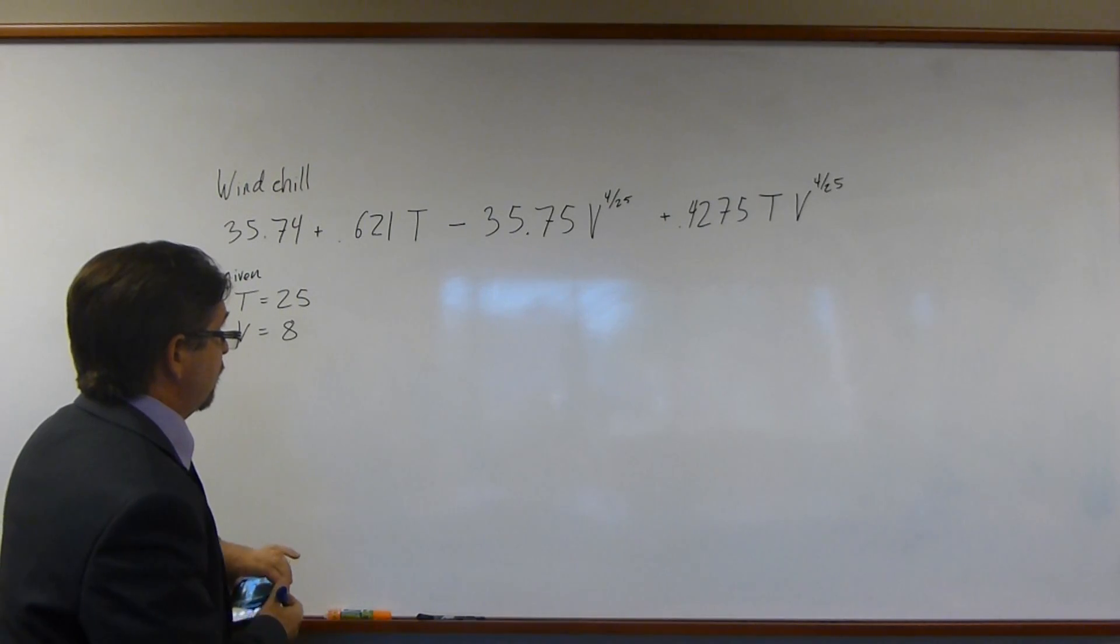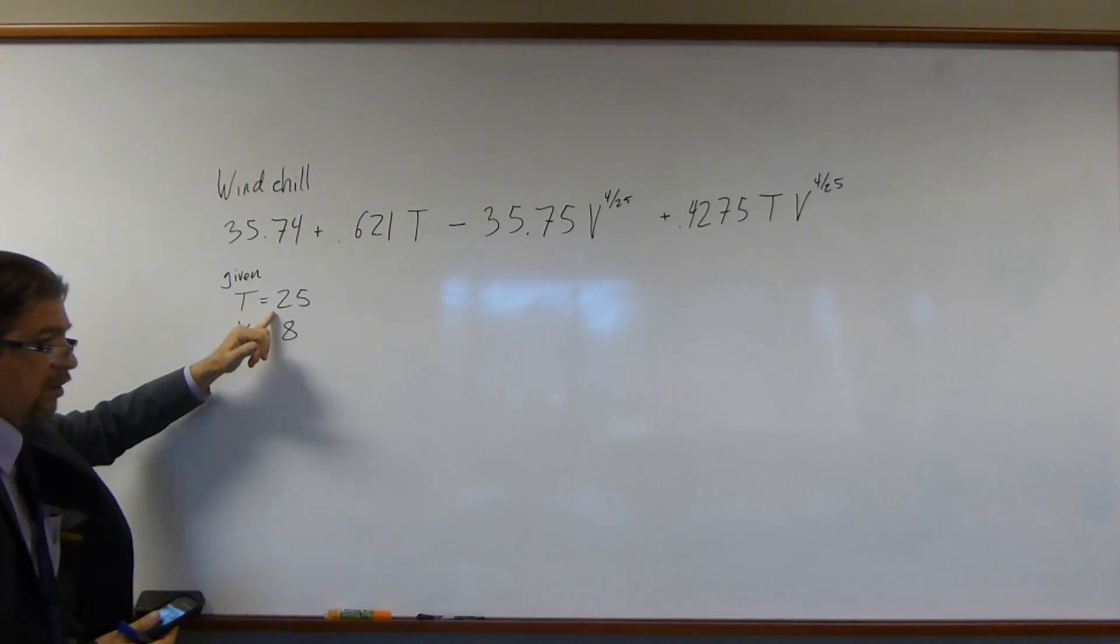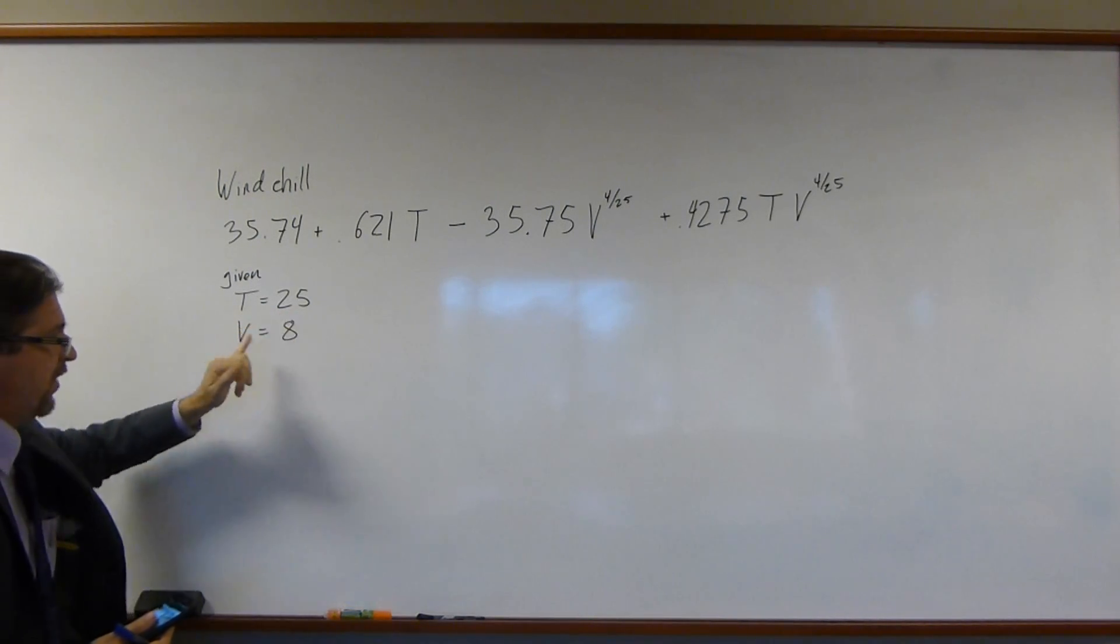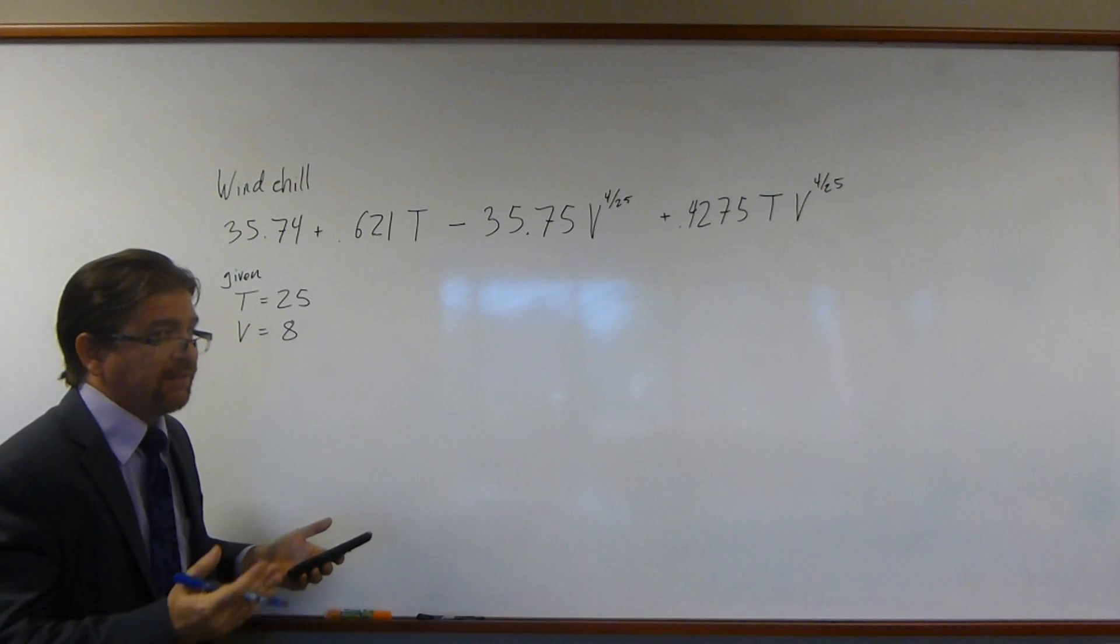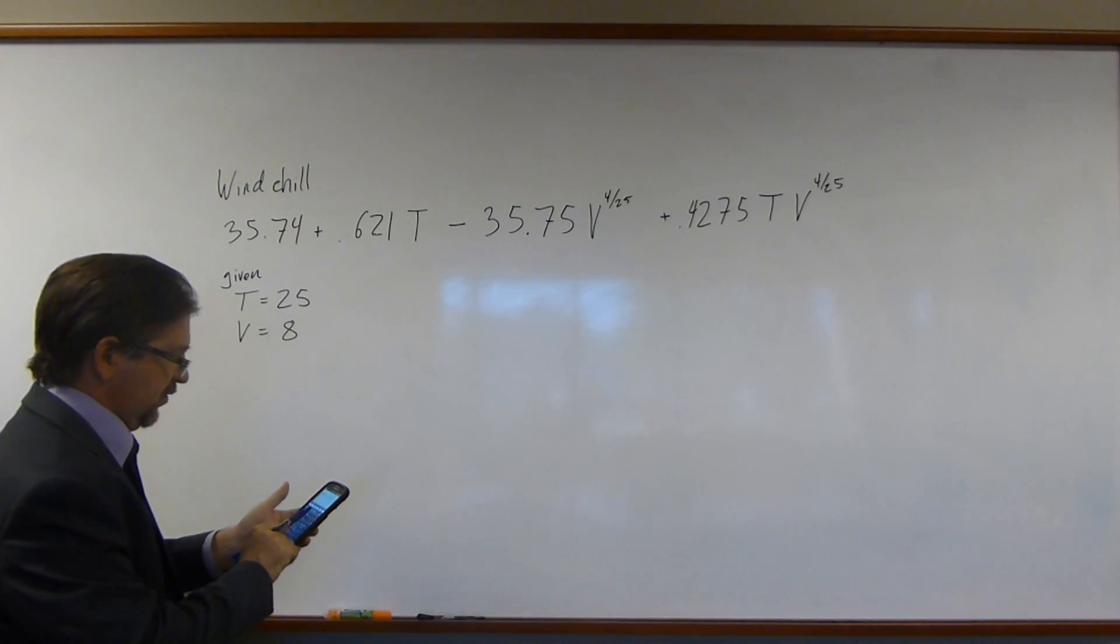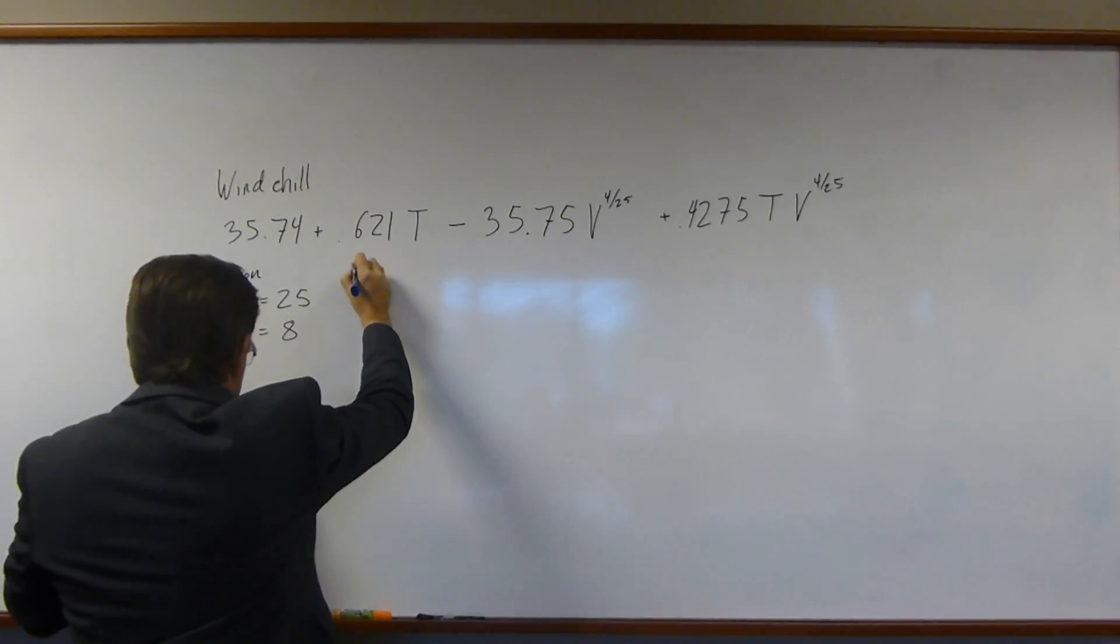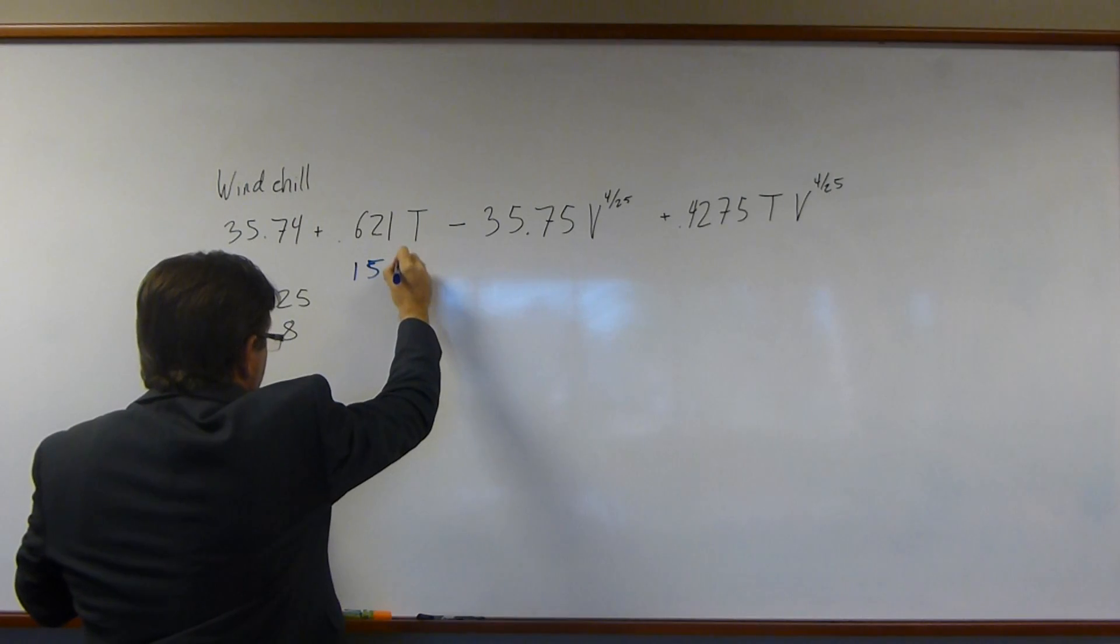So we have 0.621 times T. We're going to set T as 25 and V as 8. This will of course work no matter what T and V are. So 0.621 times 25, this gives us 15.525.